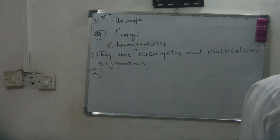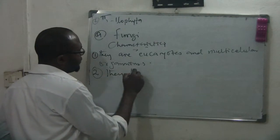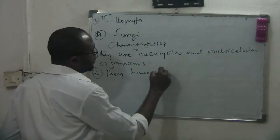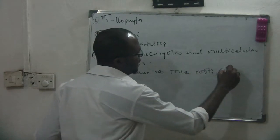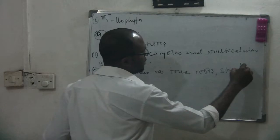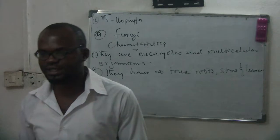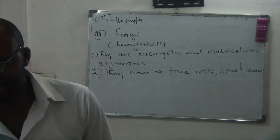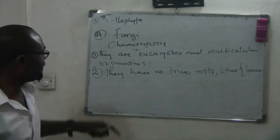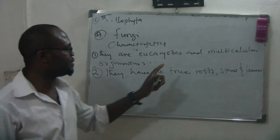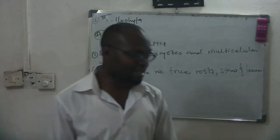Number two: fungi have no true roots, stems, and leaves. Unlike normal green plants that have stems and roots, fungi do not have true roots, true stems, or true leaves.